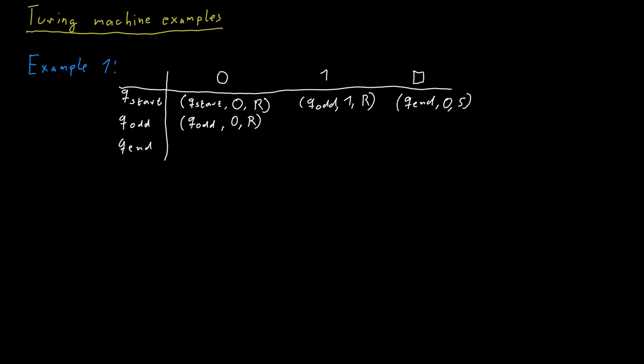If it reads a 1 in this state, it switches the state back to q_start. It writes a 1 and moves one cell to the right. And if it encounters a blank symbol, it will move to q_end and write a 1 instead of the blank symbol and stay where it is with its head.